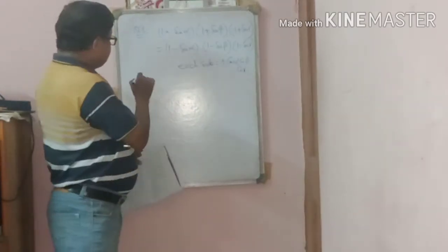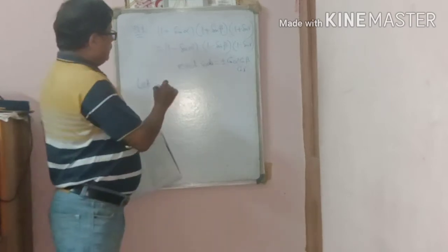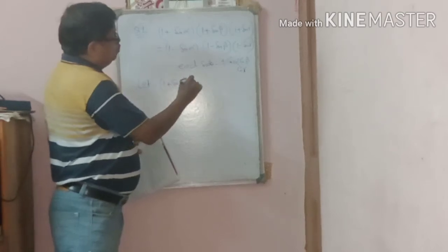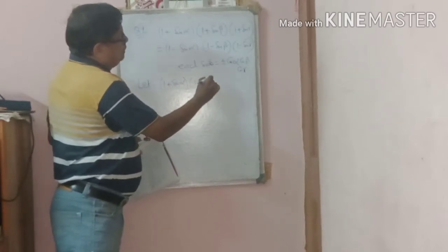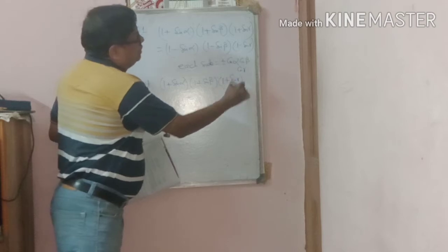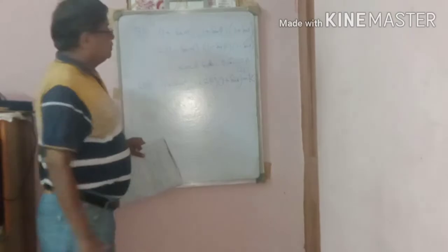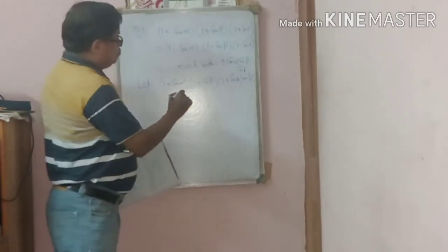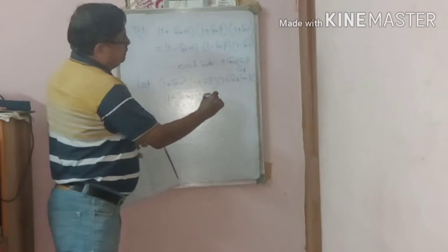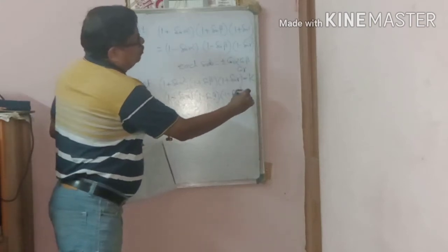Let us consider each side equal to k. So let (1 + sinα)(1 + sinβ)(1 + sinγ) = k, and also (1 − sinα)(1 − sinβ)(1 − sinγ) = k.